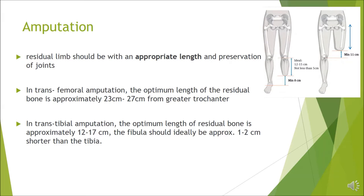In the amputation phase, the important thing is to create a proper stump. There should be appropriate length of residual bone for proper prosthetic fitting and functional training. In transfemoral amputation, the optimal length of the residual bone is approximately 23 to 27 cm from the greater trochanter. In transtibial amputation, the optimal length should be 12 to 17 cm.